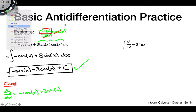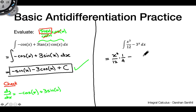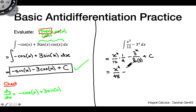Now we have the integral of x^3/12 minus 3^x dx. For x^3/12 we use the inverse power rule, adding 1 to get x^4/12, then dividing by 4. For 3^x, there's a specific identity: the antiderivative is 3^x divided by ln(3). So our answer simplifies to x^4/48 minus 3^x/ln(3) plus c. Note that this natural log does not have an absolute value — that's only for the 1/x case.